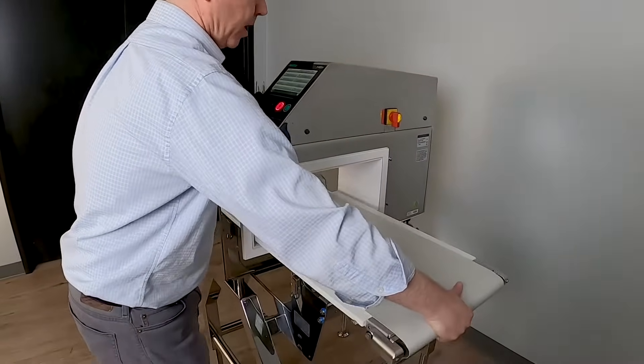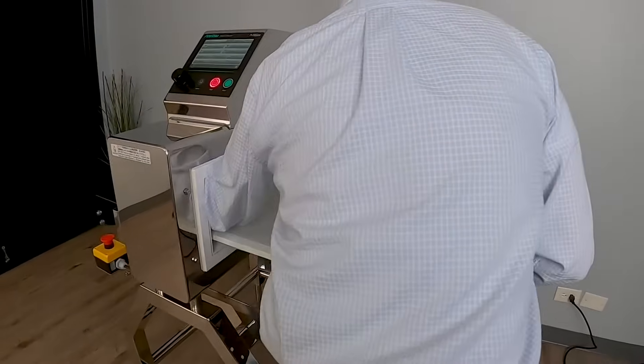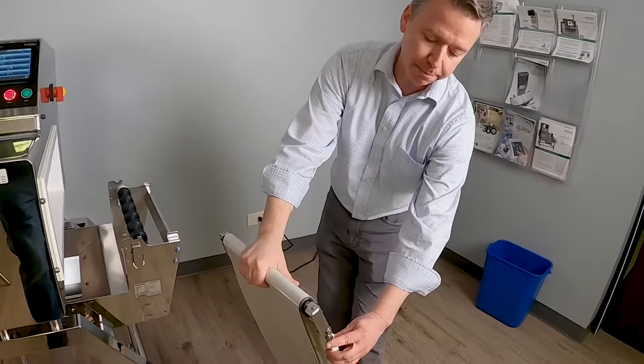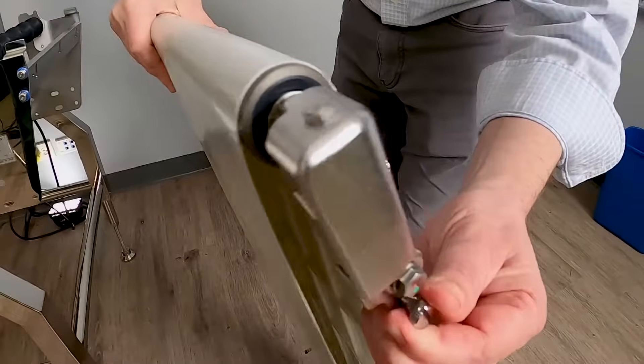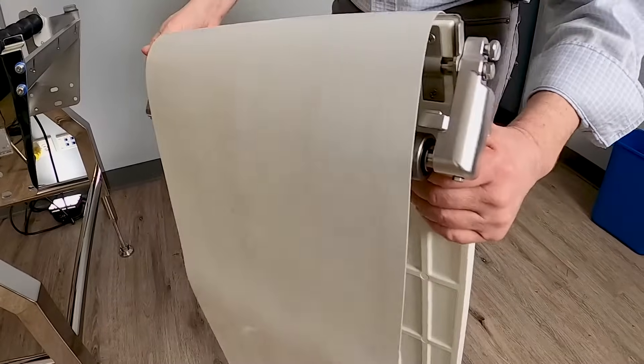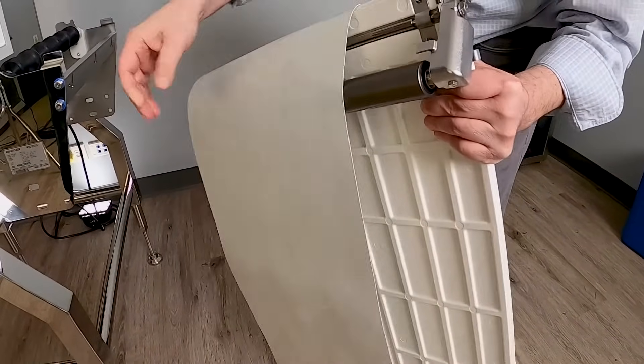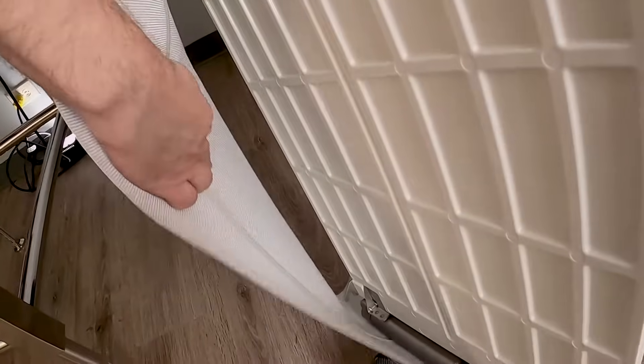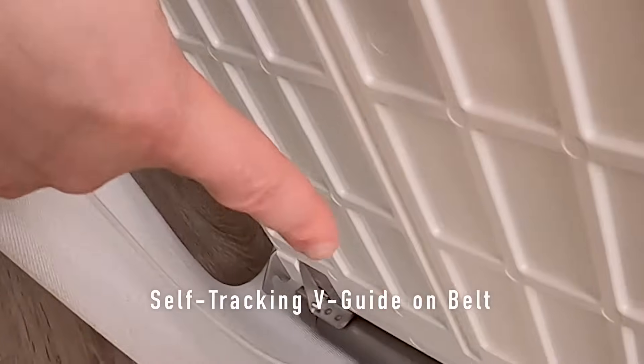So it comes right out, I'll pull it through. You'll notice that there's a pin here. So I'll just pull the pin, the roller will tilt over, and then if you can see down here there's a v-guide and there's a slot in the roller.